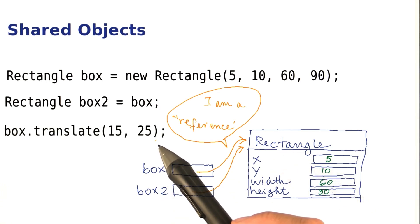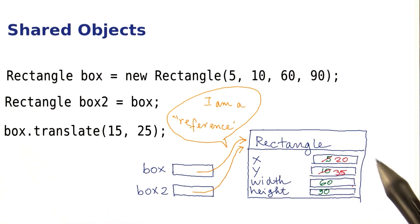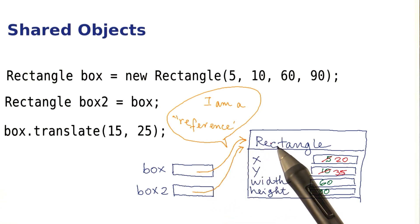Now suppose we call a mutator on one of the variables. As you can see, the object has changed. And that change is observable both through the variable box and through the variable box two.